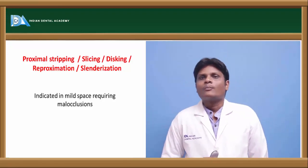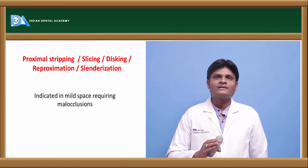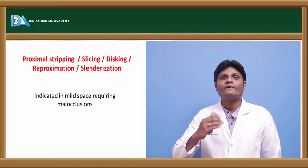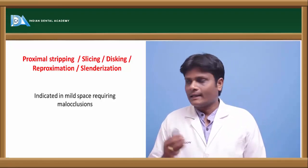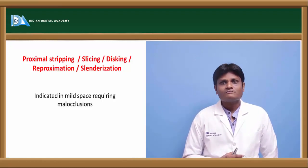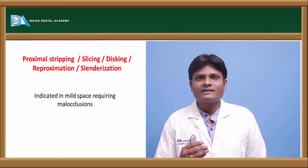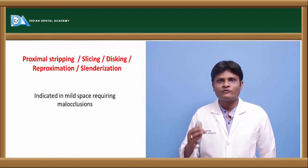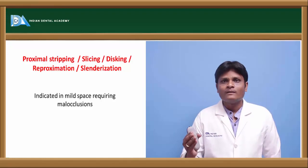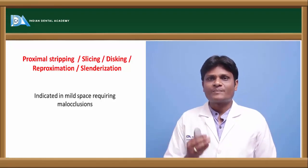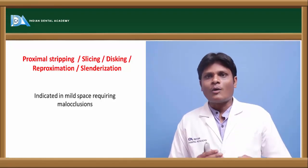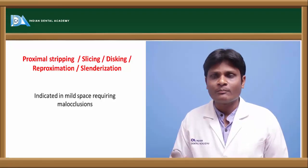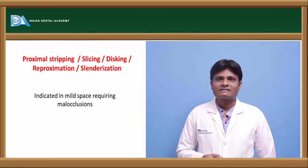Proximal stripping is indicated in cases where there is a very mild requirement of arch length or a very mild excess of tooth material. As discussed in model analysis, in cases where the discrepancy between arch length and tooth size is about 0 to 2.5 mm, we obtain space by reducing the tooth material by 2.5 mm through proximal stripping or slenderization.